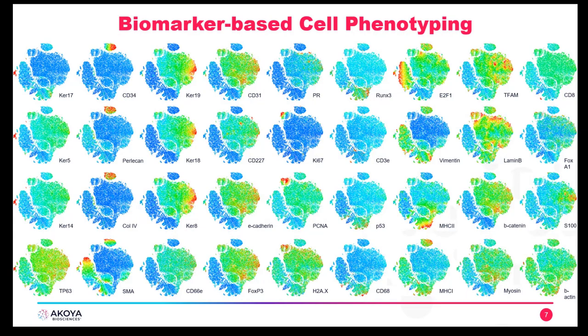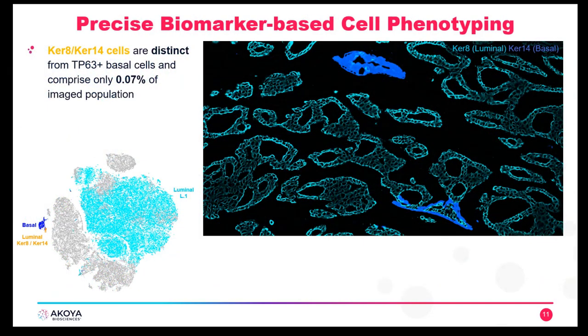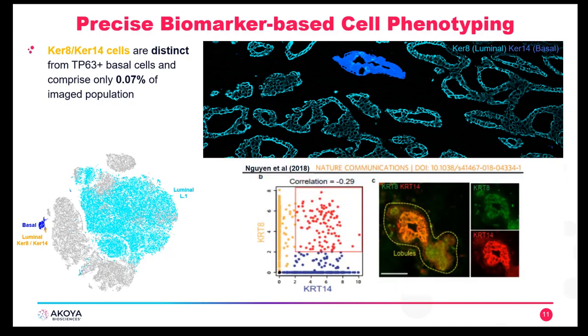We can see all of our biomarkers expressed in biaxial gates and TSNE plots. Focusing on a few biomarkers such as our keratins, we know that they're grouped together — our basal markers are all located in one 2D location and our luminal markers in another. We'll also see how to identify a rare population of keratin 8 and keratin 14 positive cells, as identified by a colleague using a combination of clustering and TSNE plots.